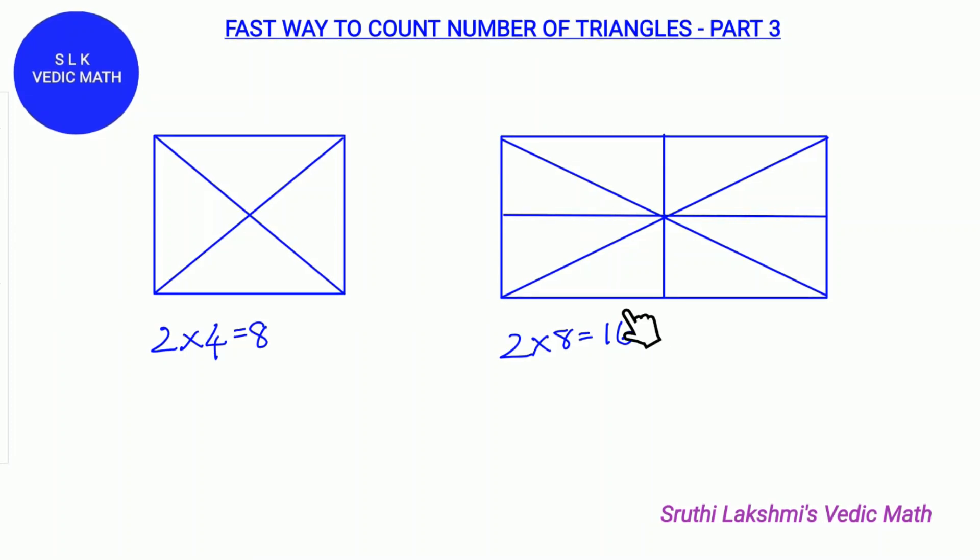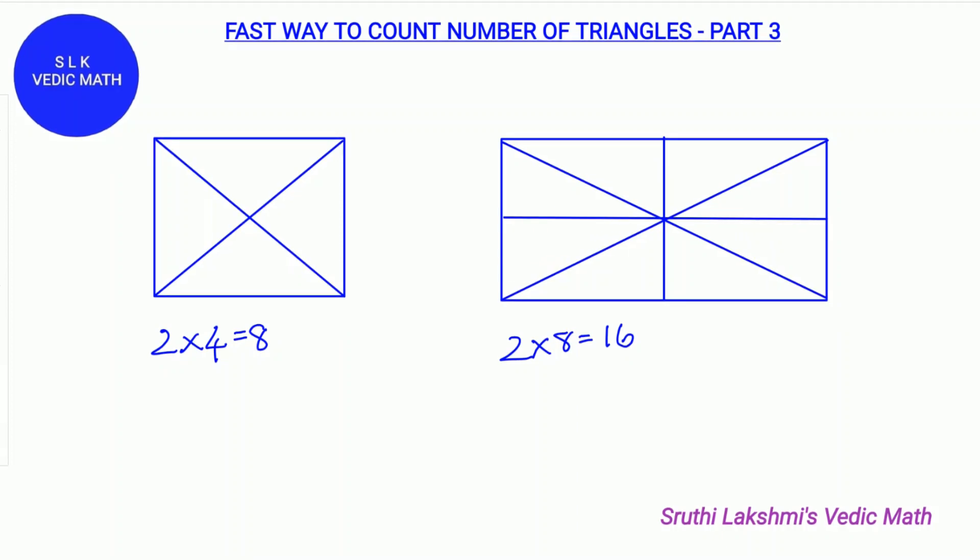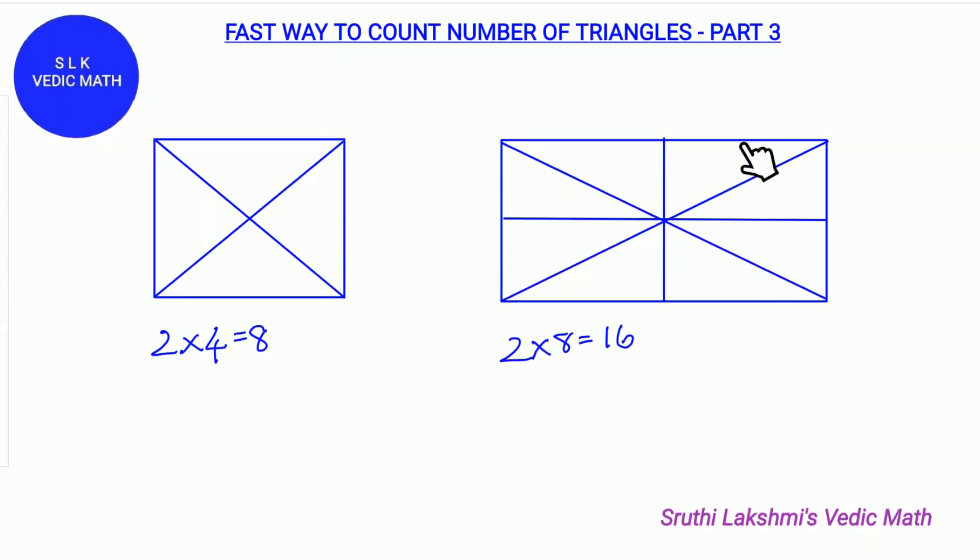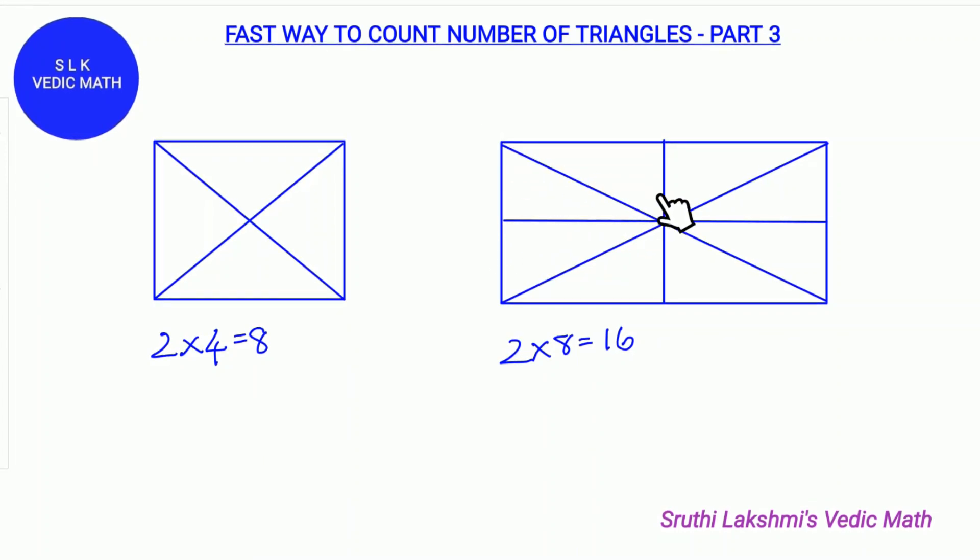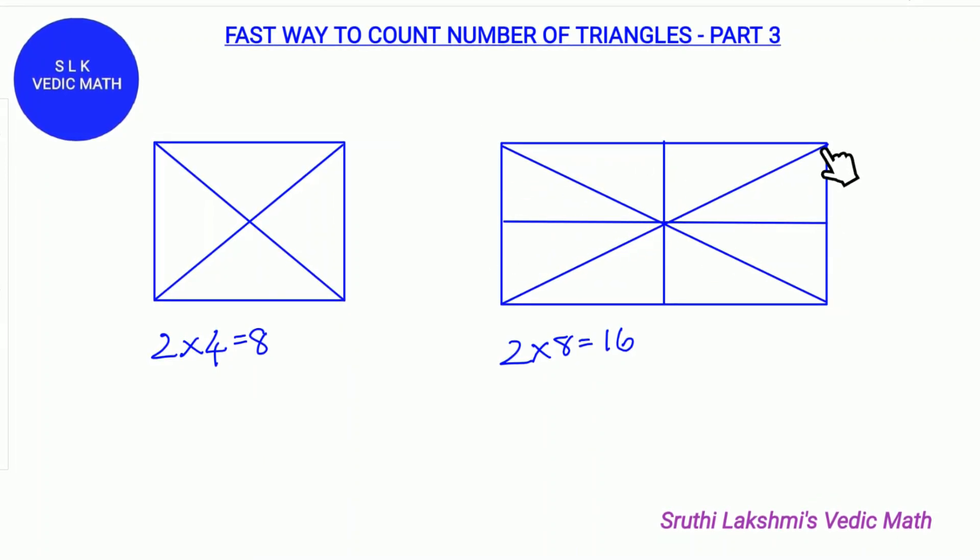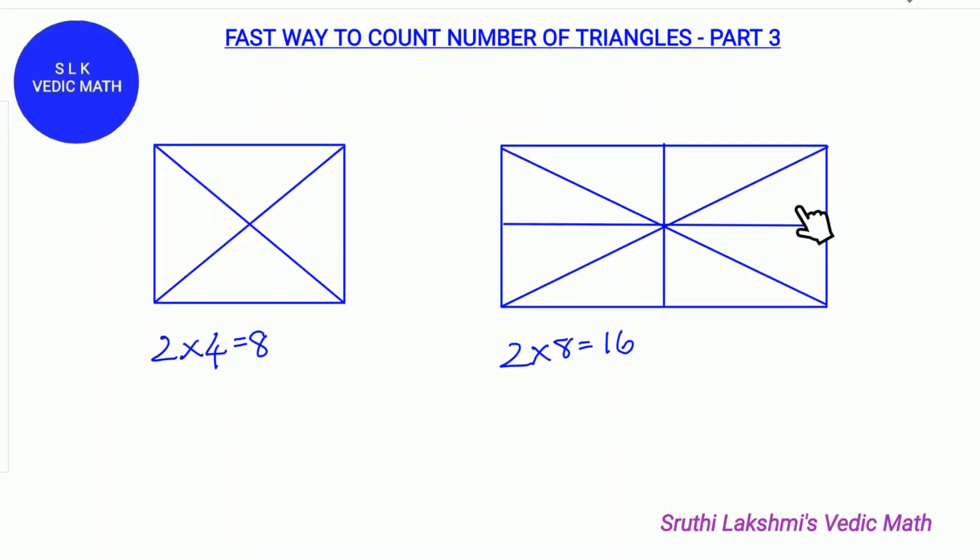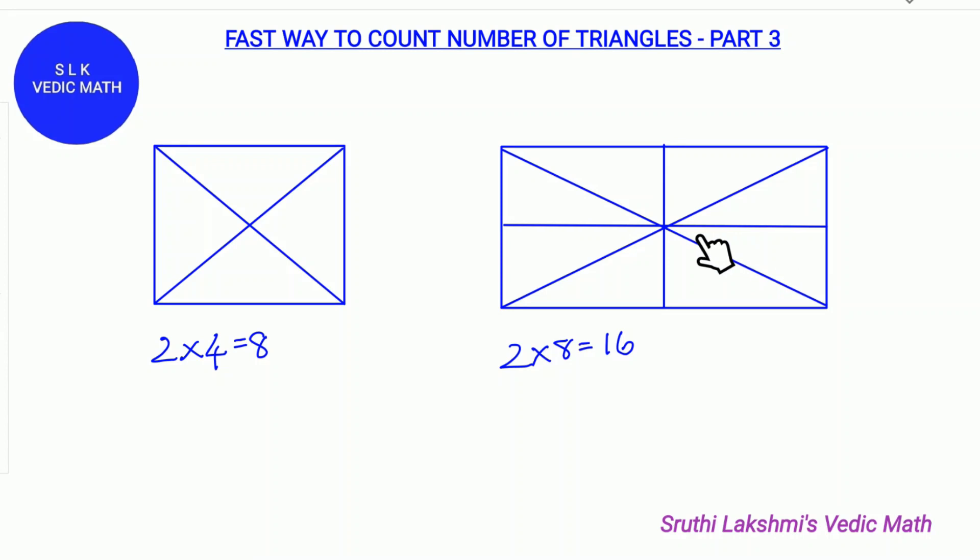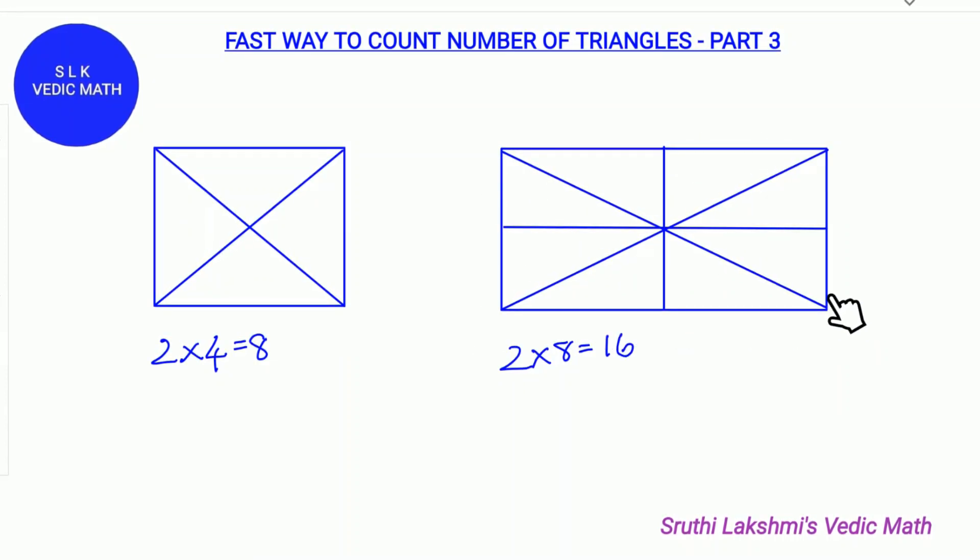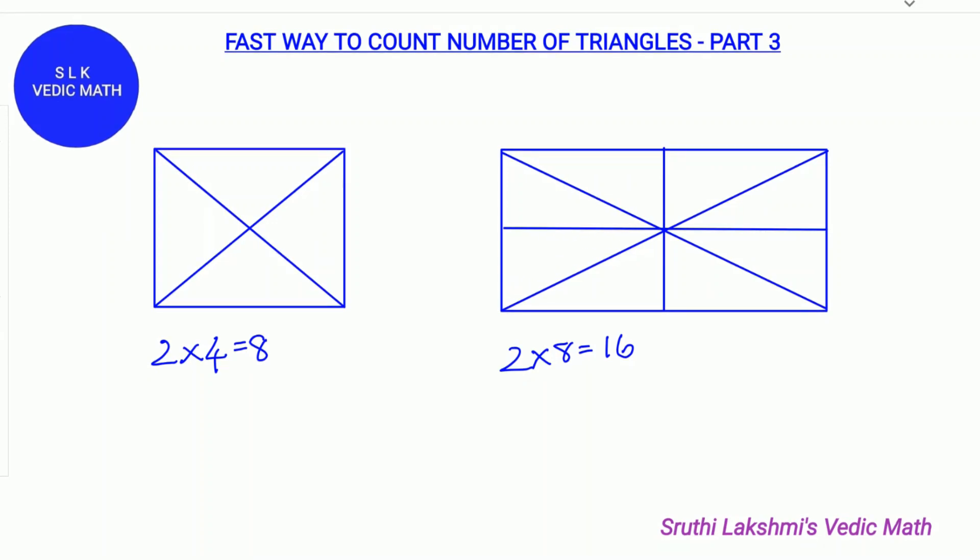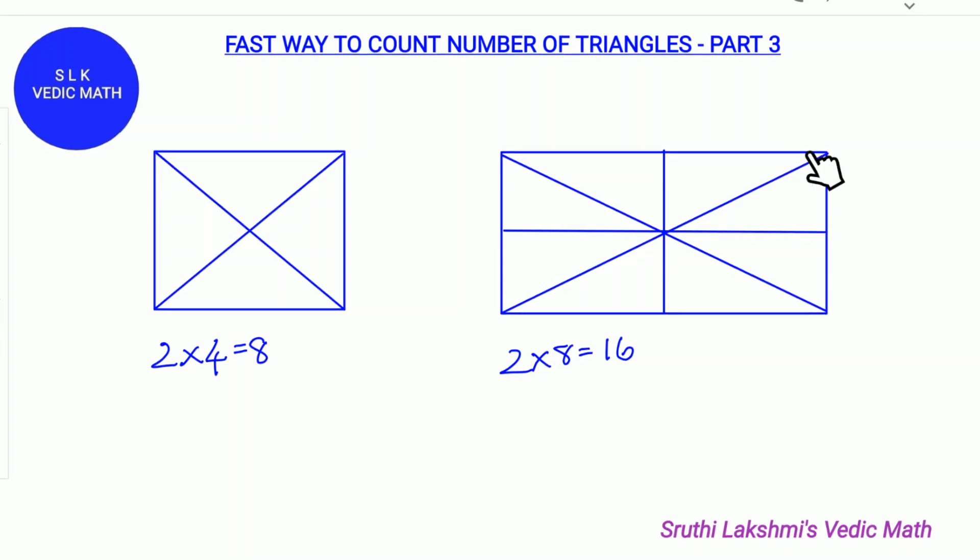So there are 16 triangles in this big rectangle. Let's see how. There are already 8 parts. And next this is the 9th, 10th, 11th and 12th. And next 13th, 14th and next 15th, 16th. This is how we get 16 triangles in this big rectangle.